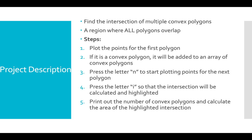Then, in order to find the intersection of all convex polygons, I'll press the letter I so that the intersection will be calculated and highlighted. The program also prints out the number of convex polygons and calculates the area of the highlighted intersection.